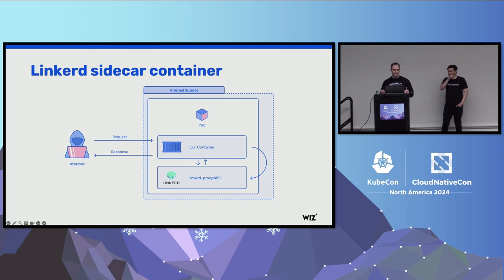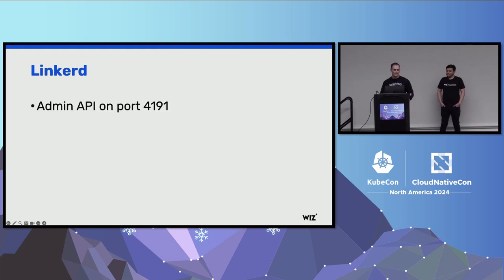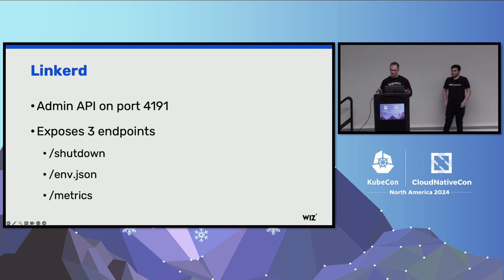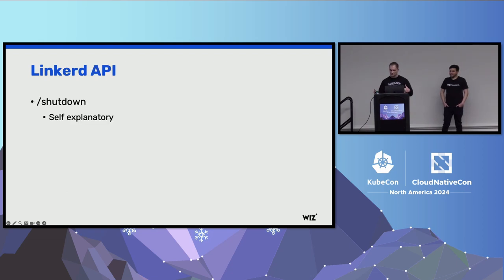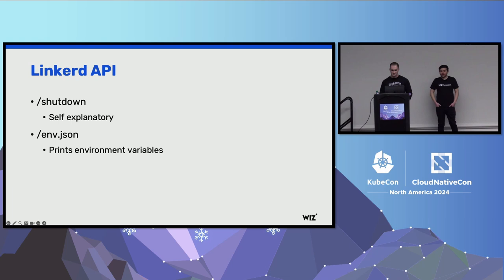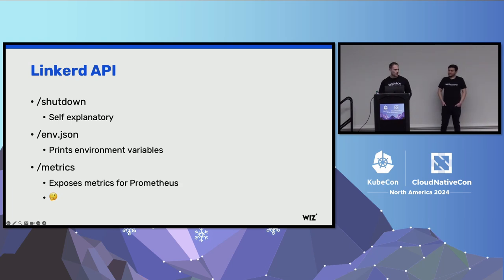So while we were thinking we were communicating with the vulnerable component, we were actually communicating with its sidecar. We delved into Linkerd's documentation and source code and found that port 4191 is actually an admin API port. Diving a bit further showed us that it's a pretty simplistic API exposing only three endpoints: shutdown and metrics. Shutdown is quite self-explanatory — right off the bat, we can cause some disruption on the Azure ML platform. But we are not this kind of researchers, so we decided to move forward.